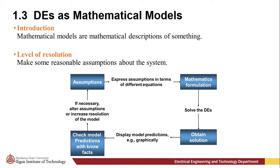Construction of a mathematical model of a system starts with the identification of the variables that are responsible for changing the system. We may choose not to incorporate all these variables into the model at first. In this step, we are specifying the level of resolution of the model.